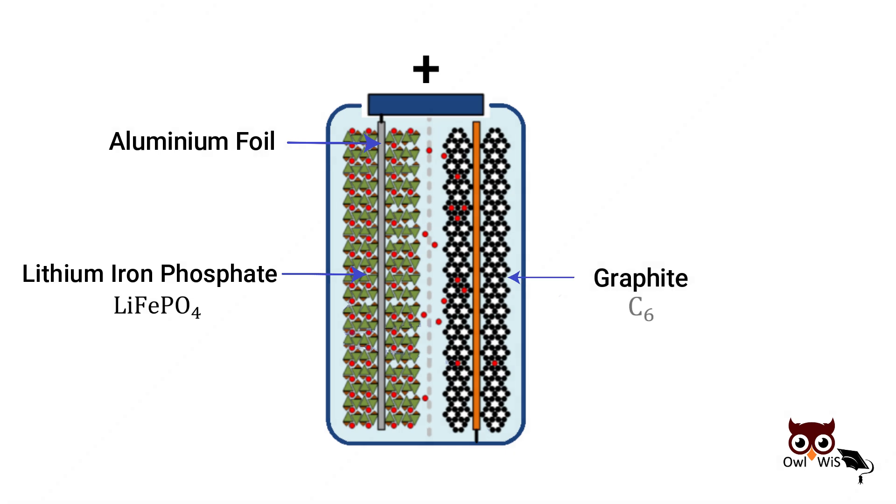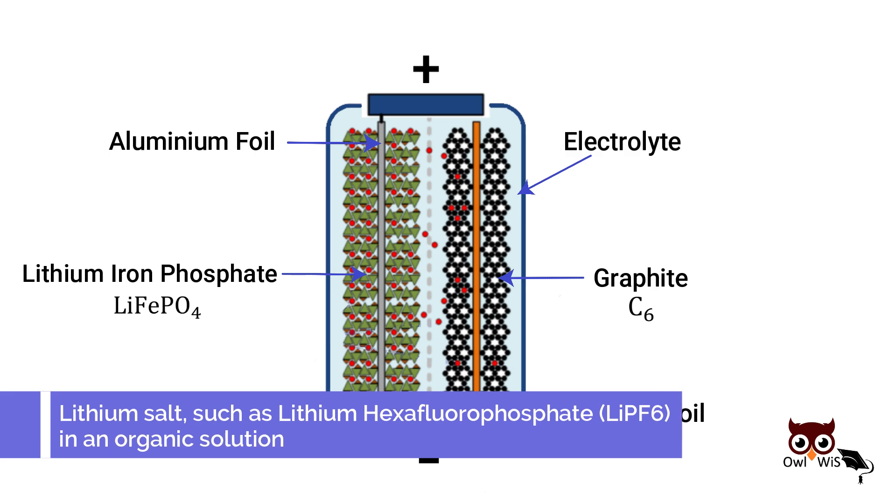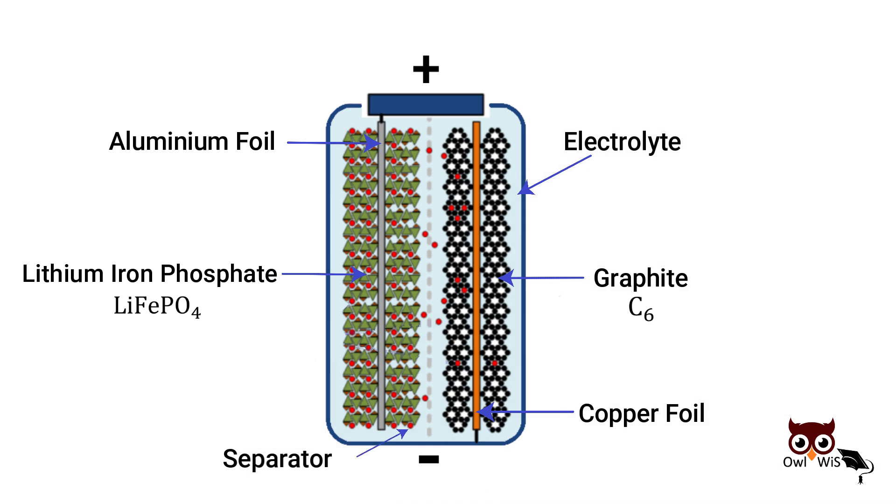The anode of the battery is composed of graphite, which is connected to the negative electrode by copper foil. The most commonly used electrolyte is comprised of lithium salt, such as lithium hexafluorophosphate, in an organic solution. Separators are made up of polyolefin material, which is either polypropylene or polyethylene, or both combined.